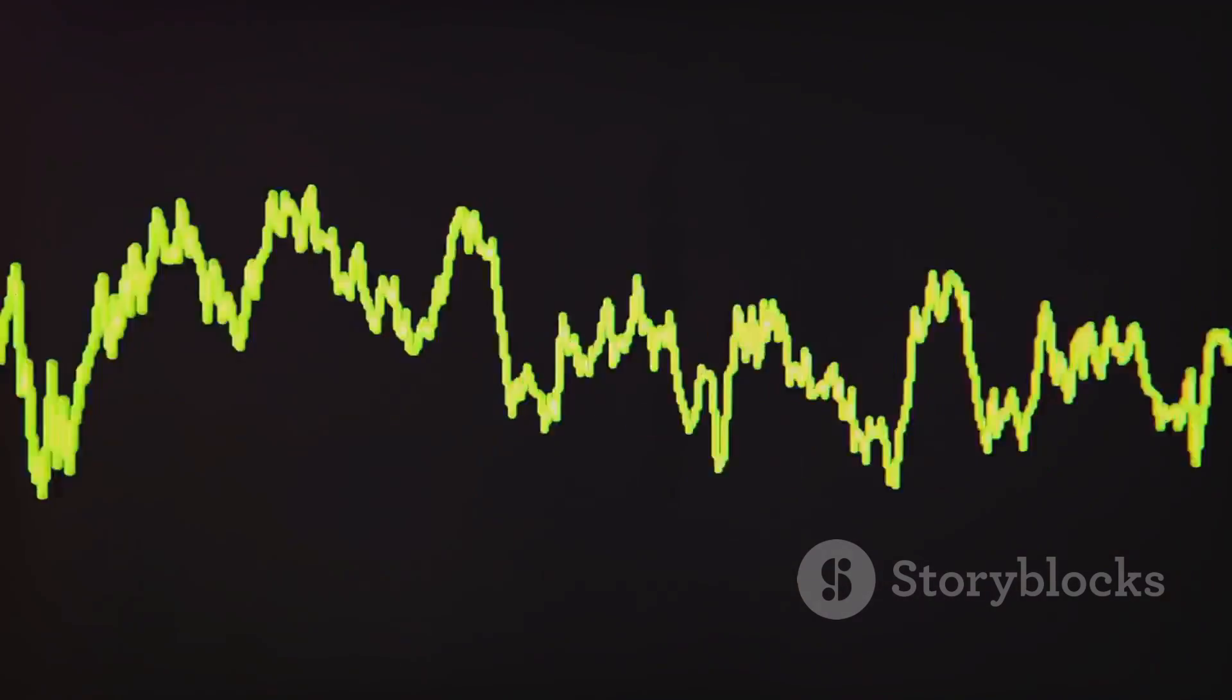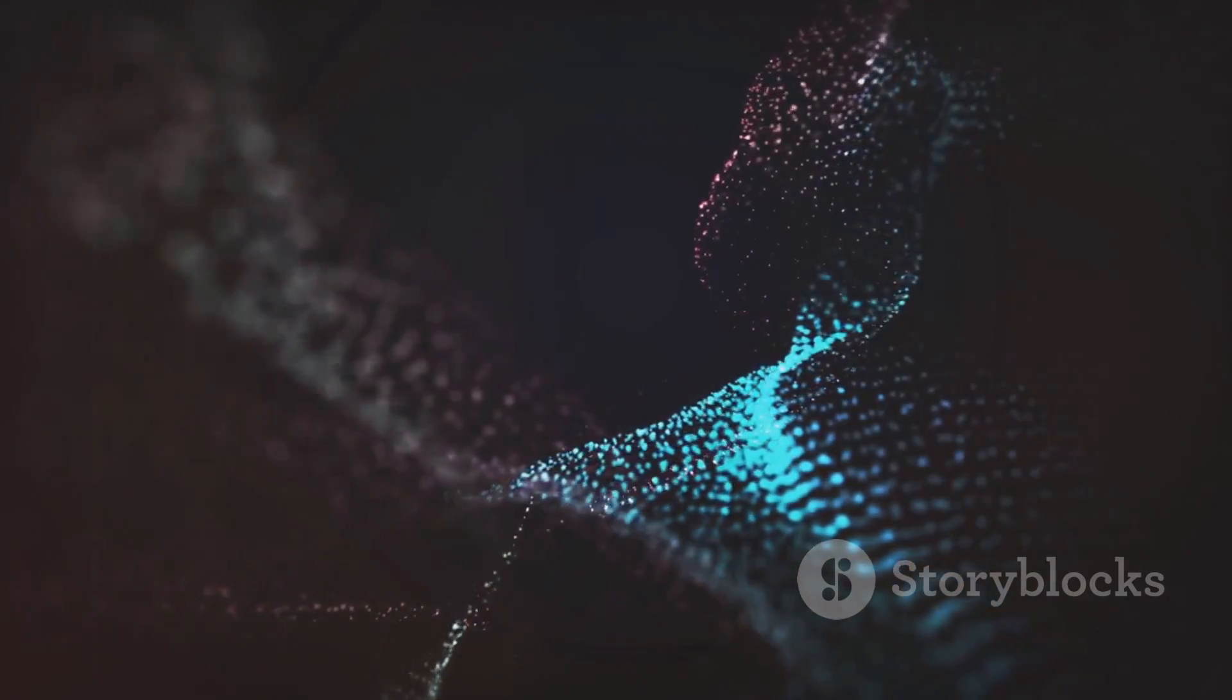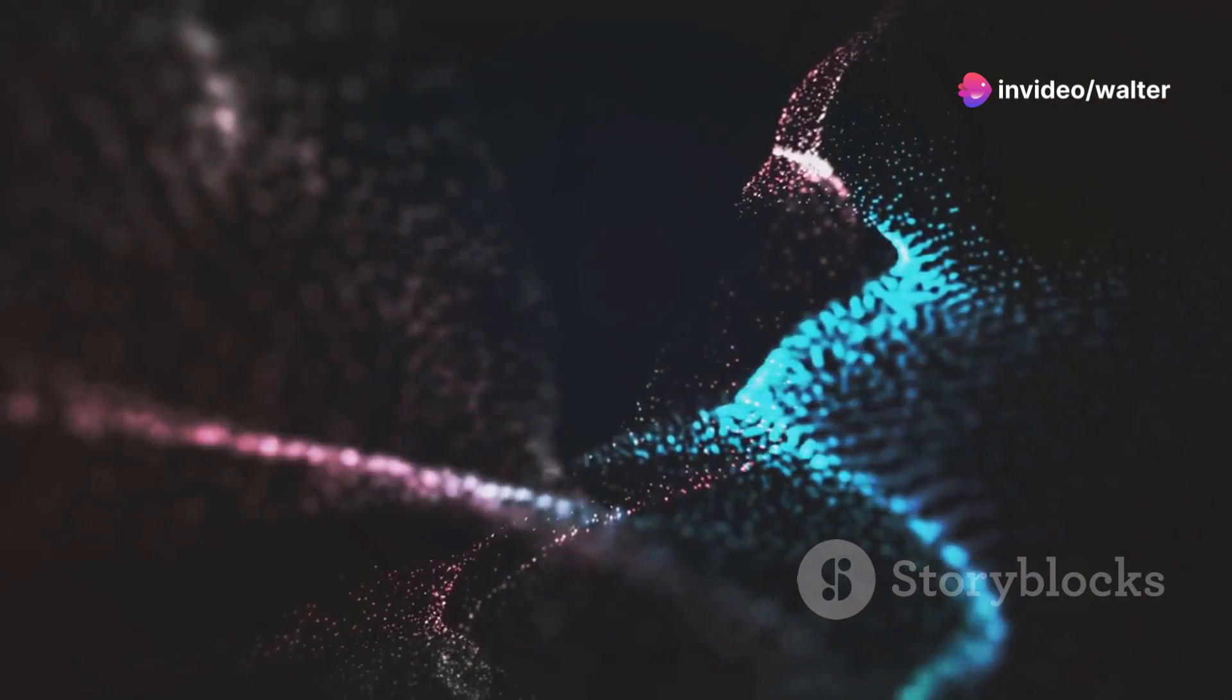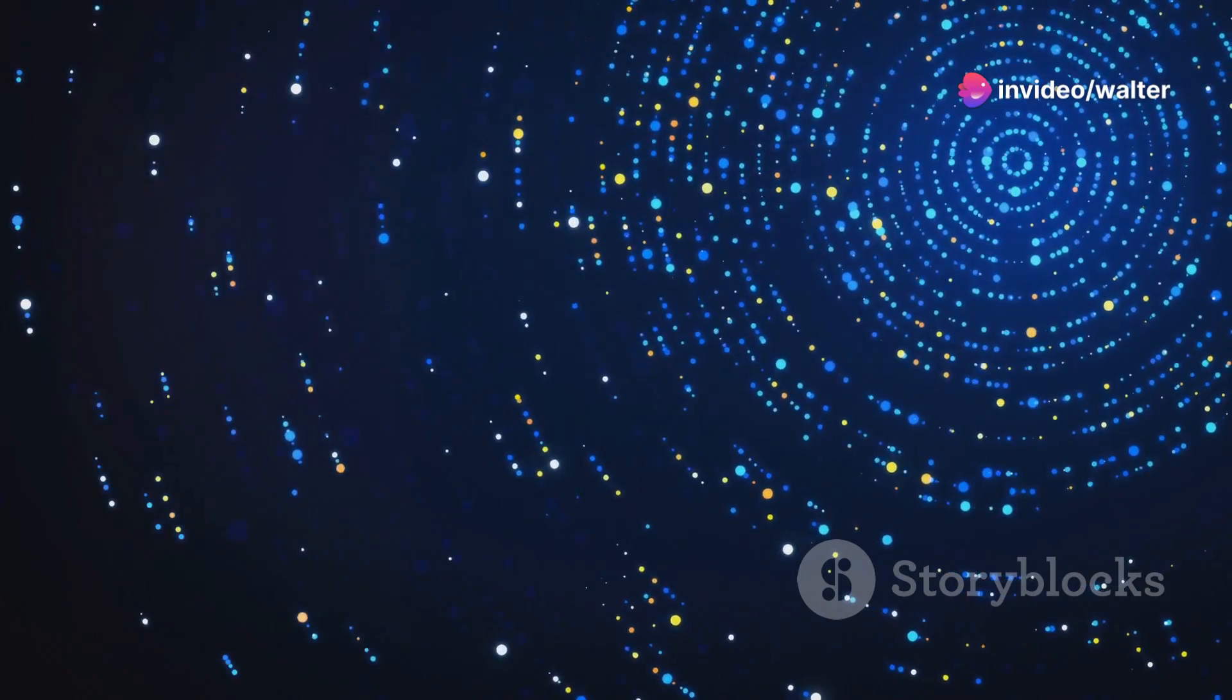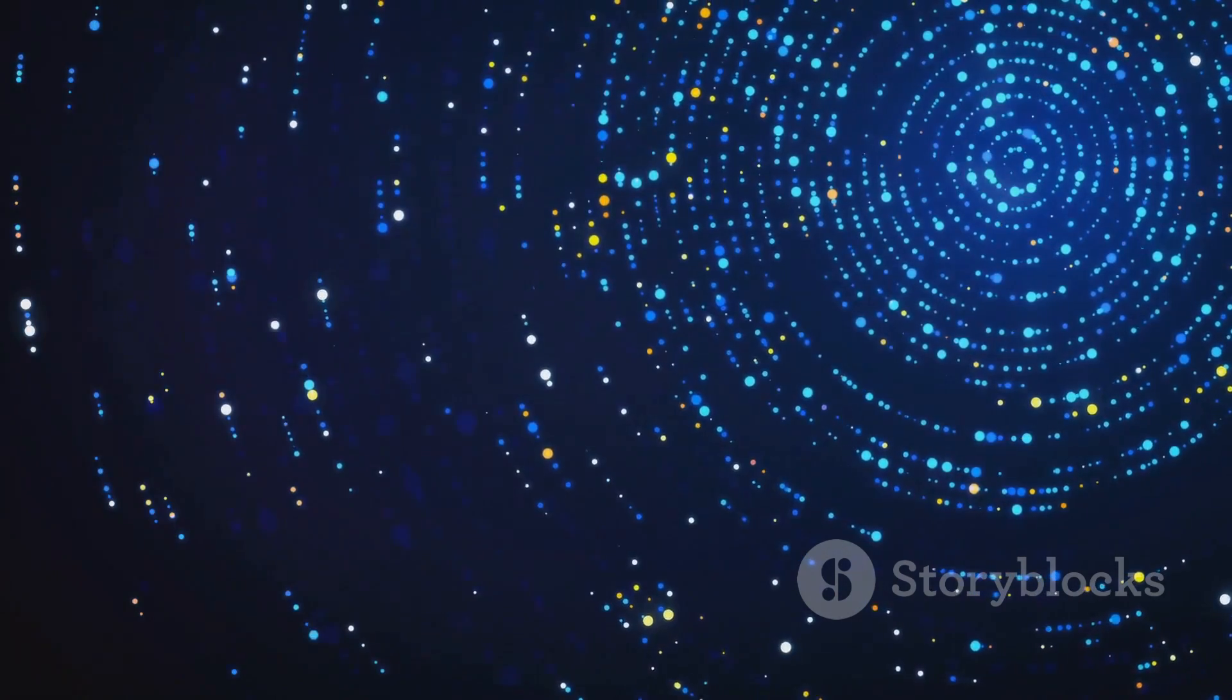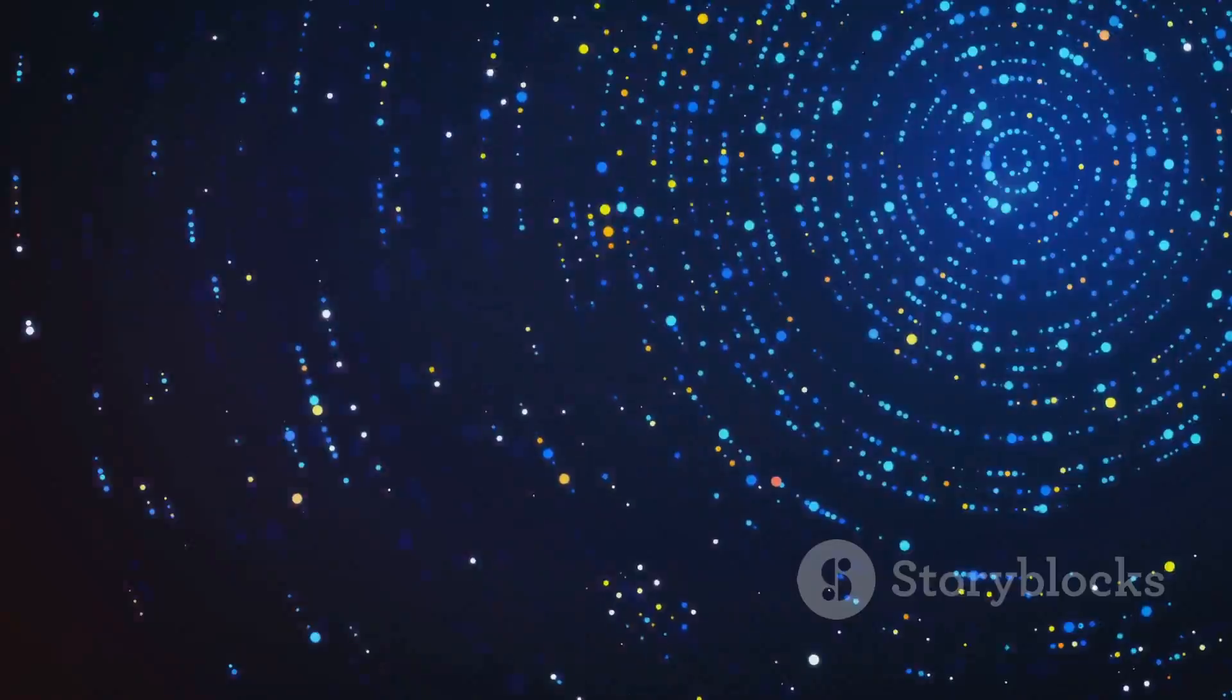These waves, according to Russell, were the building blocks of everything, the raw material from which matter emerged. He envisioned atoms as tiny swirling vortexes of these waves, miniature whirlpools in the cosmic sea. The faster the vortex spun, the denser the matter it formed, giving rise to the different elements.